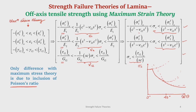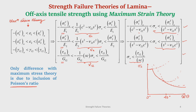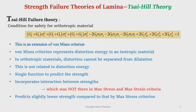In both maximum stress theory and maximum strain theory, each directional strength is considered independently, so they are non-interactive or independent theories. There is no interaction between the different strength parameters. Now we will discuss the interactive theories.